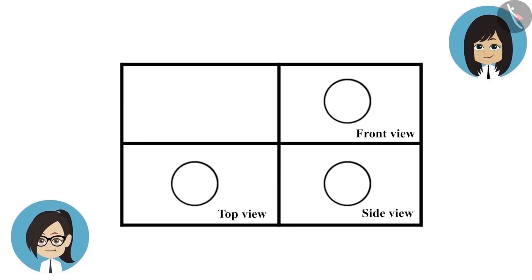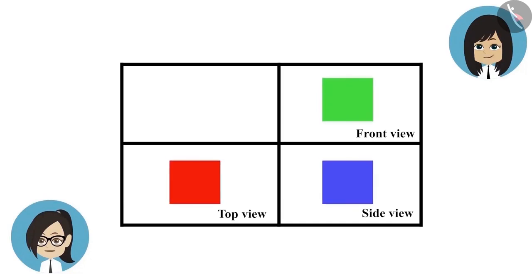How can this happen? All three views of any object should be different. Hey, I have another drawing in which all three views of one object are the same. Show that also. See this. All these are in the shape of a square and that too of the same size. Yes, now try and guess. Let's first start with the second drawing in which all are in the shape of a square. Okay, this is the drawing. Let me try to make it.